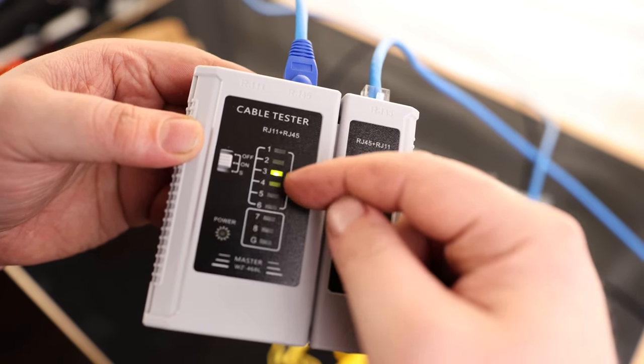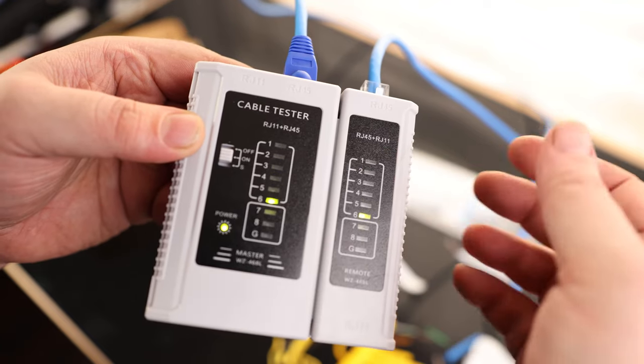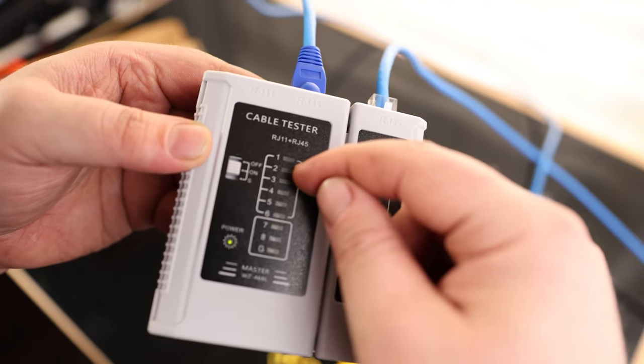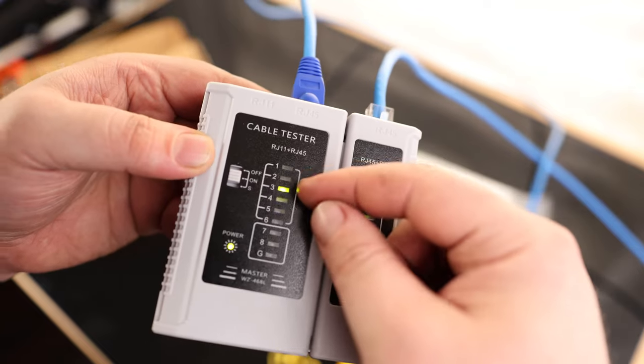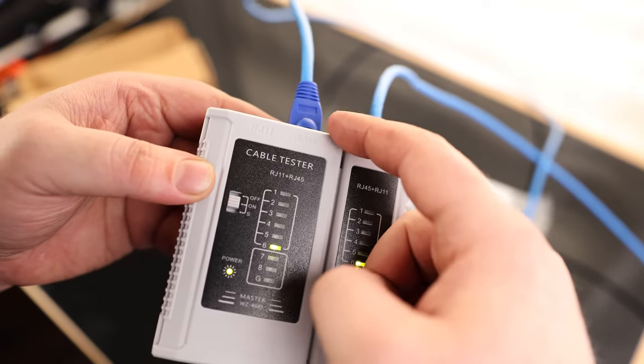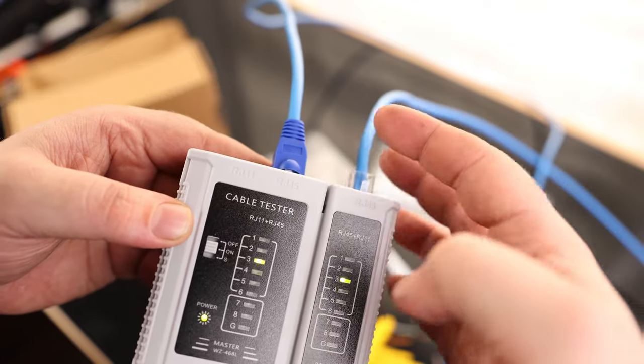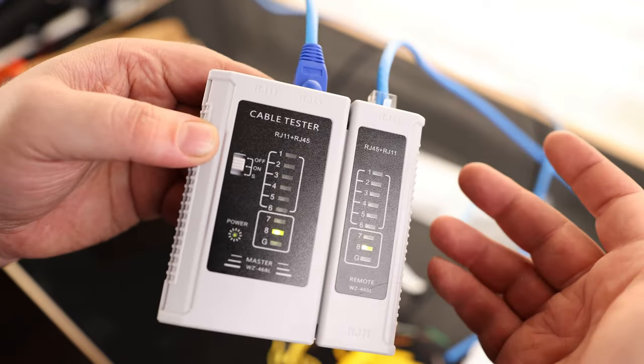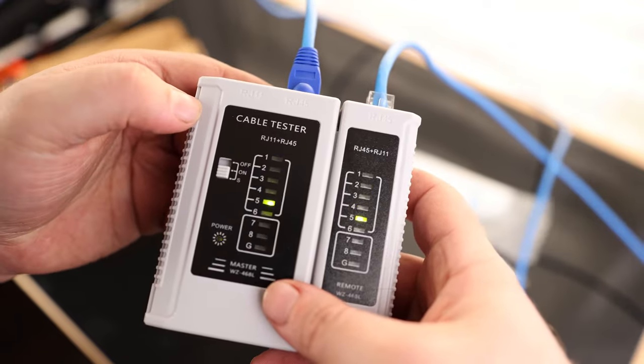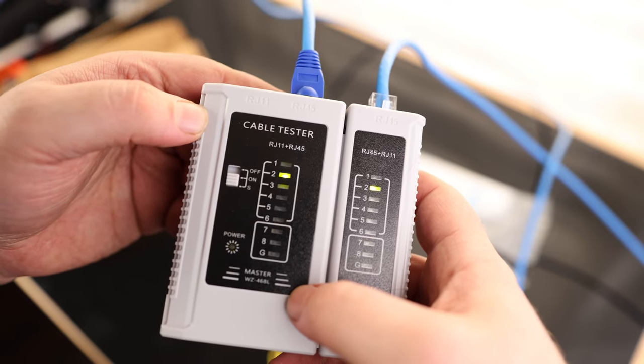Okay. So every one of these lights is lighting up. So that means that every connection is good. If one of these wasn't lighting up, then that means, for example, if two wasn't lighting up, that means that the number two wire, which would have been the orange, wasn't making a good connection. So the only thing you can do is cut that off, try it again. But this one is good. And we can switch it to S for a little bit faster.